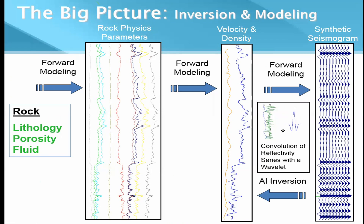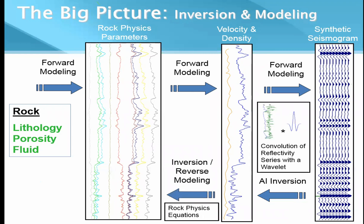Moving in the reverse direction: if we have the seismic trace we can compute acoustic impedance, then break it into velocity and density, then compute elastic parameters, and move further back to obtain lithology, porosity, and fluid. This reverse modeling is called inversion. When people say they have done inversion, that is usually just the first step — moving from seismic to acoustic impedance. We don't have practical use of acoustic impedance unless we move towards rock properties, since our original interest is in reaching those rock properties.